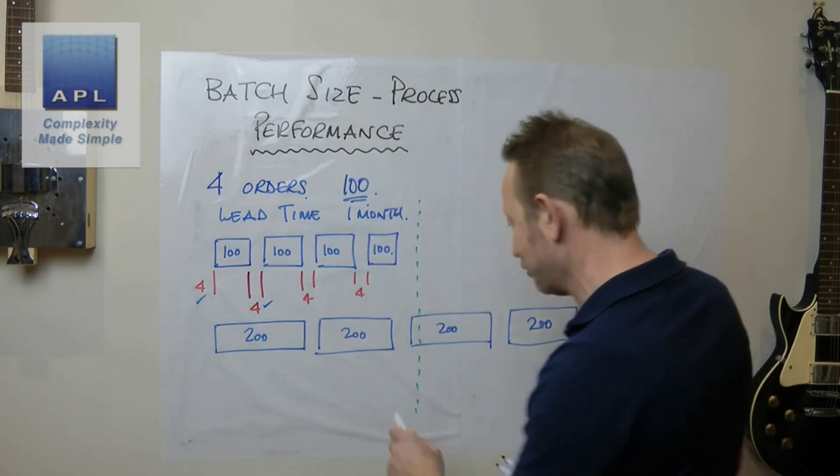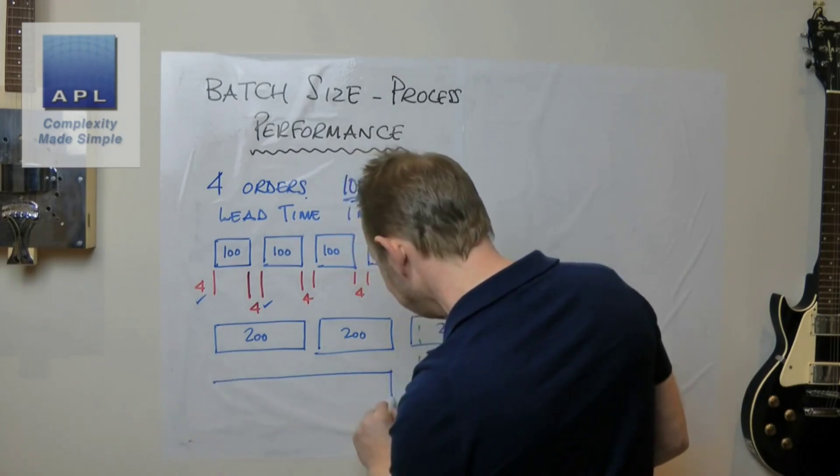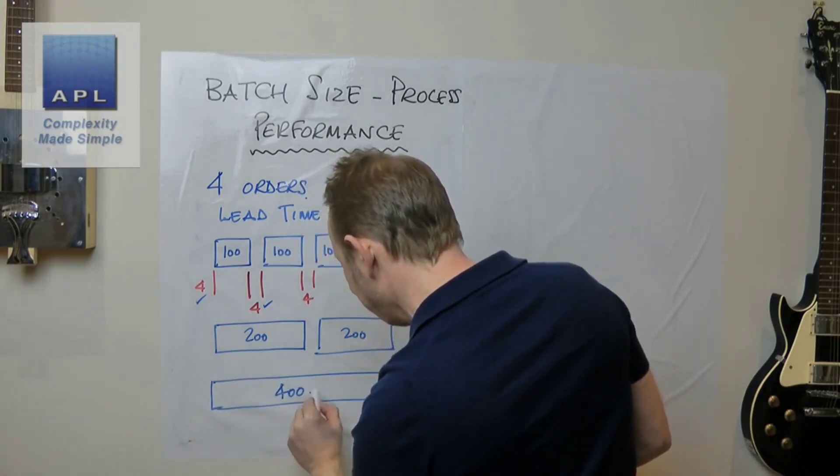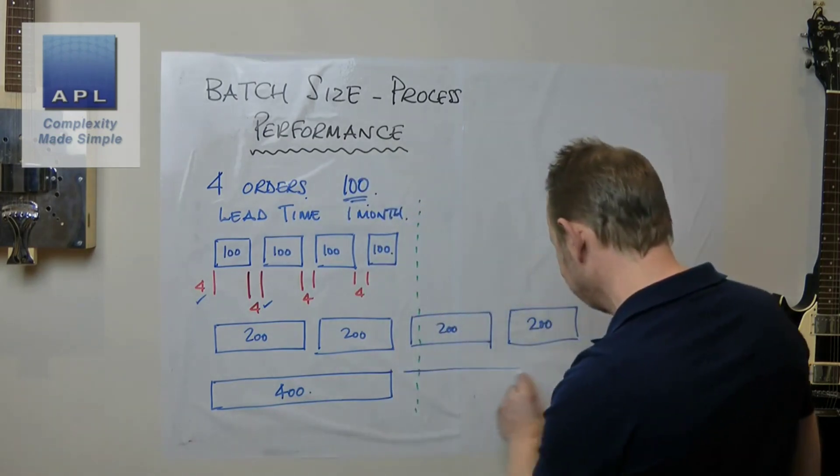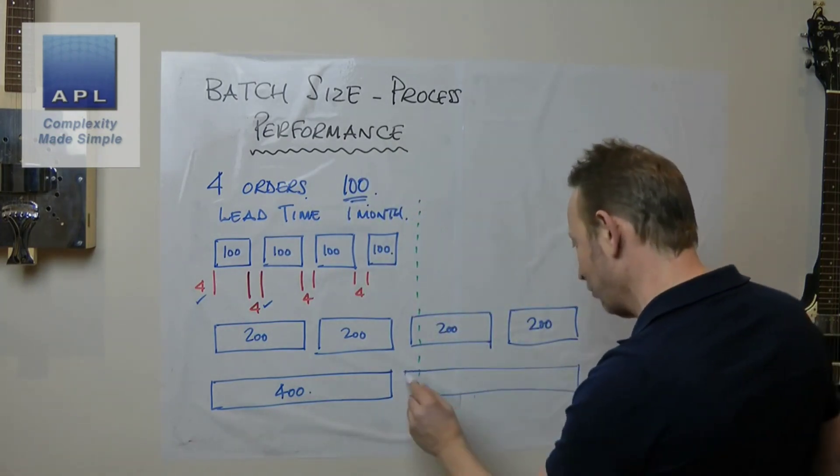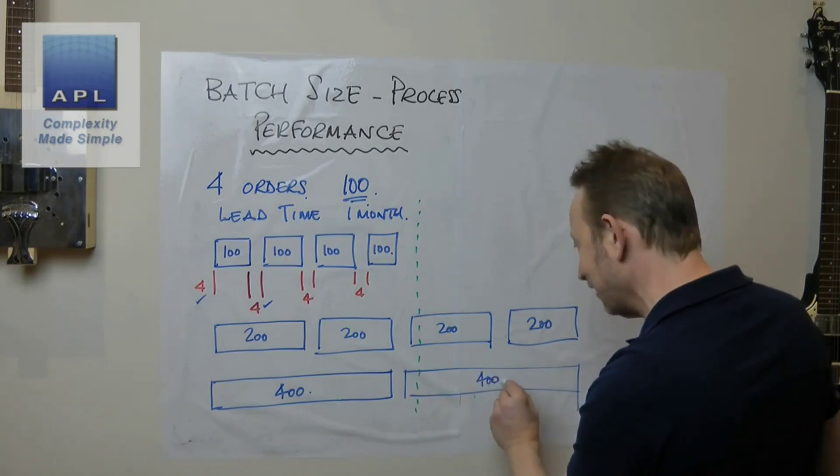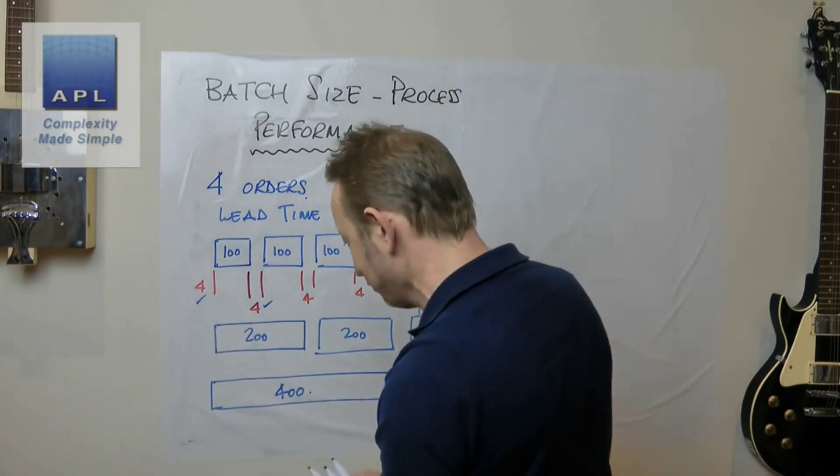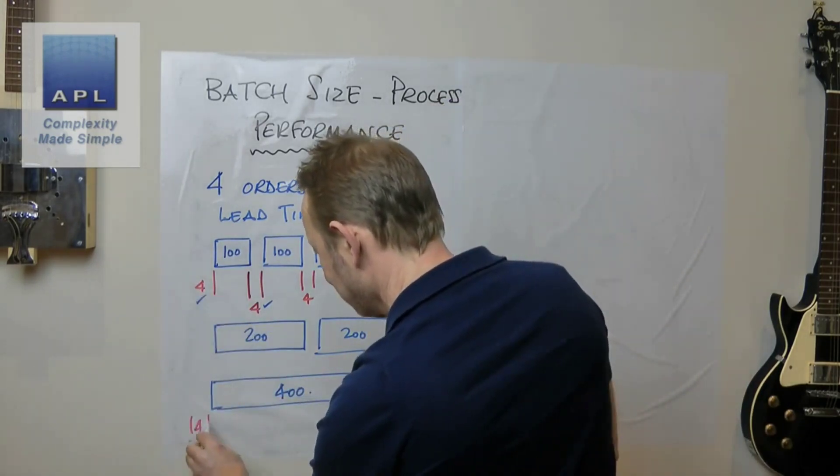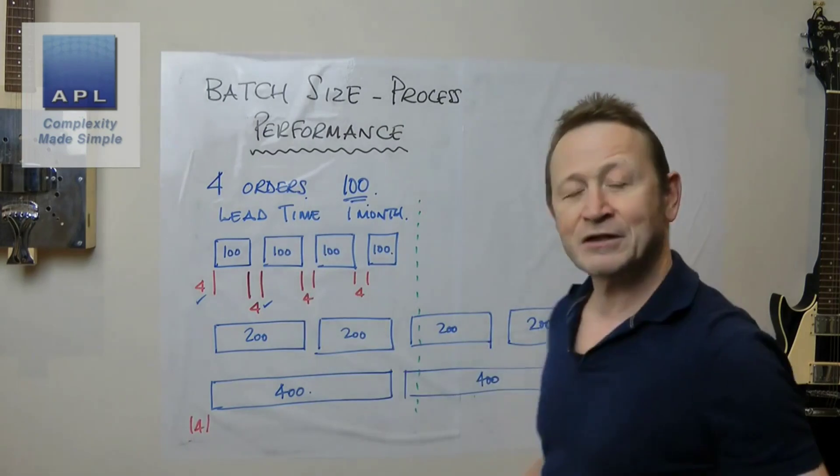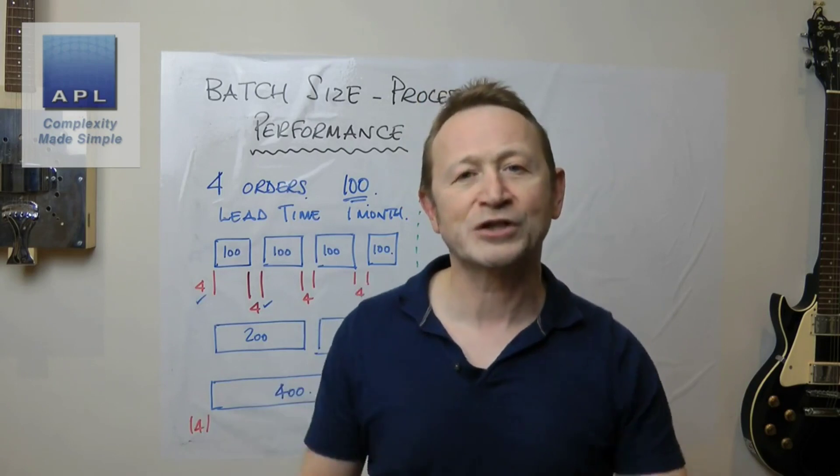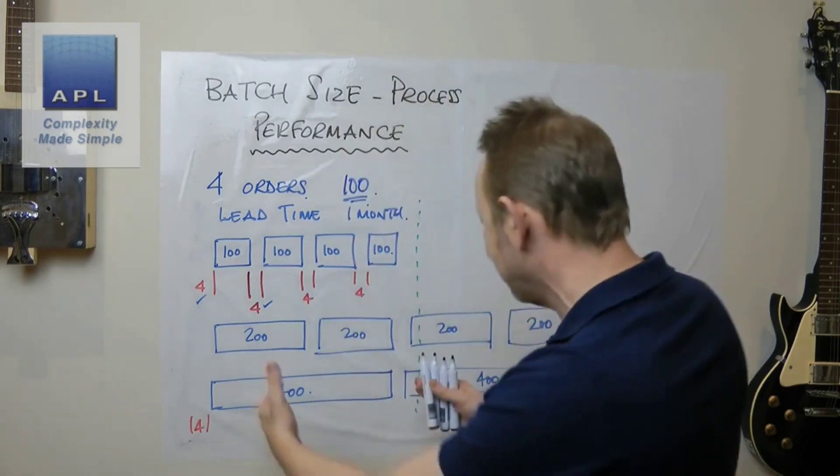They say we are out of capacity, so then there's a danger that you increase the batch size again. Now we start doing them in 400s like this. Now I don't even have enough room on the board here to put this plan together. Now we're doing one order instead of four orders, but we've only got one setup time, so we've just got the four hours there. Look at the productivity gains, look at the capacity we've got.